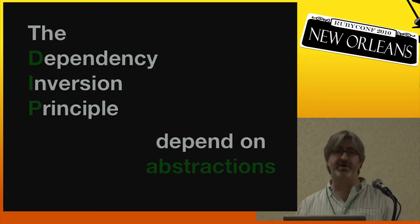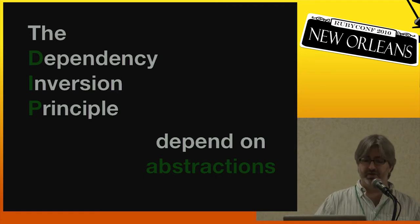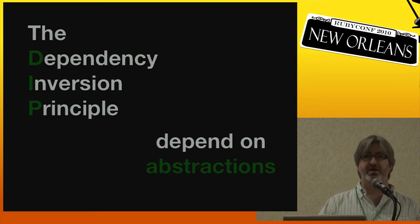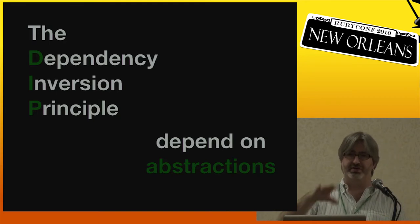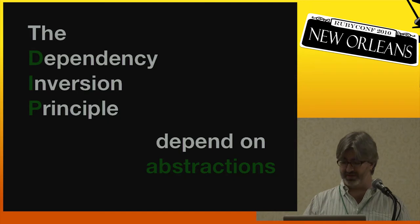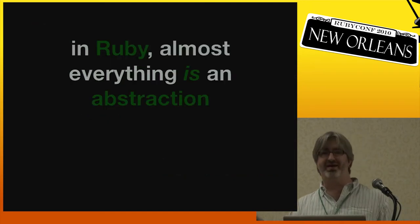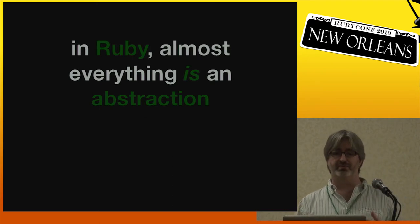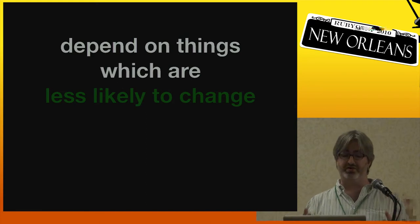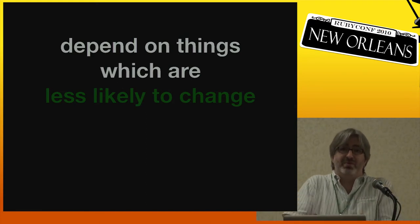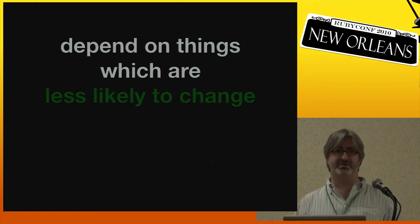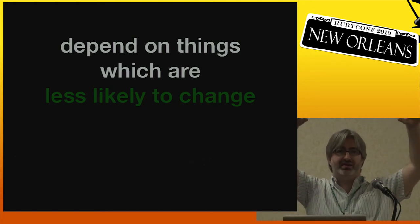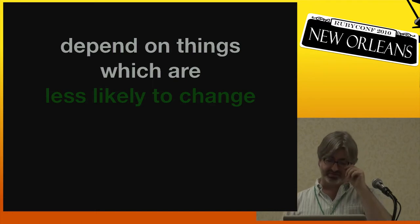One such principle is the Dependency Inversion Principle. It's a little more complicated than this, but the gist is: depend on abstractions. It was originally described in the context of statically typed languages. In Ruby, kind of everything's an abstraction at some level. So in terms of applying this to Ruby, we can rephrase it as: depend on the things which are less likely to change. That's the reason we want to depend on abstractions — the method names are not the things that change, it's the underlying implementation.